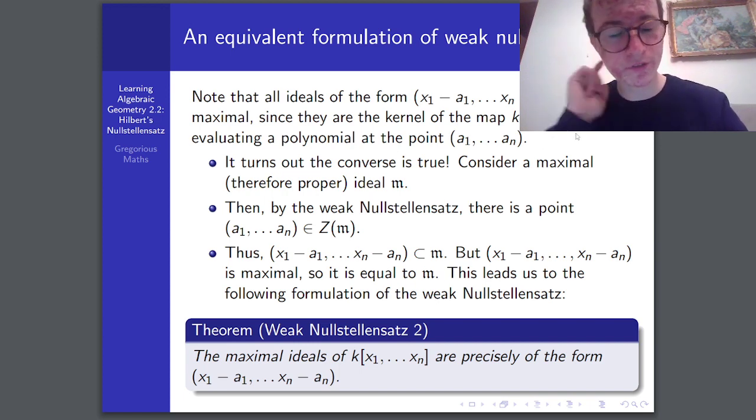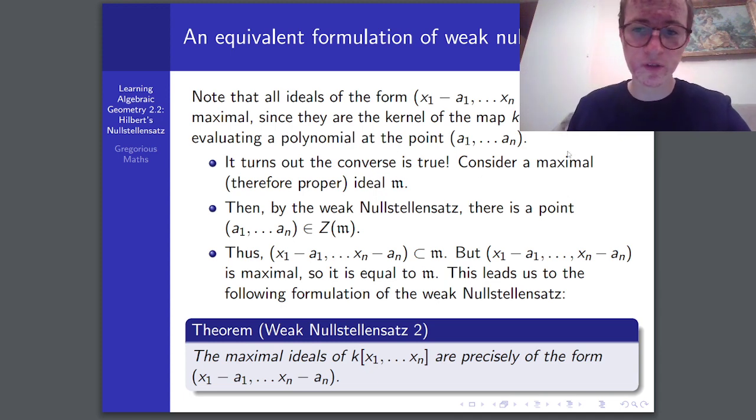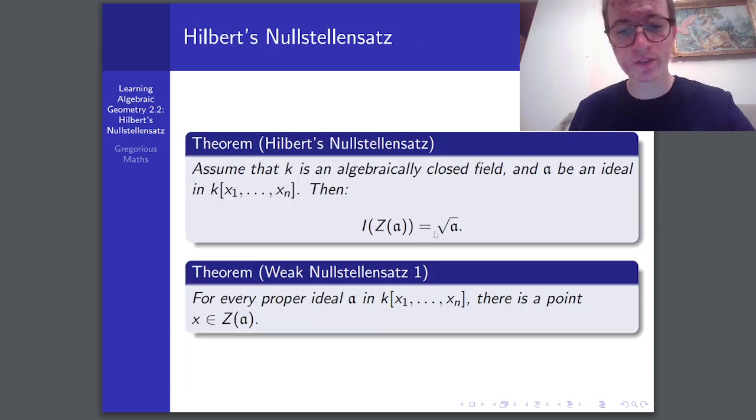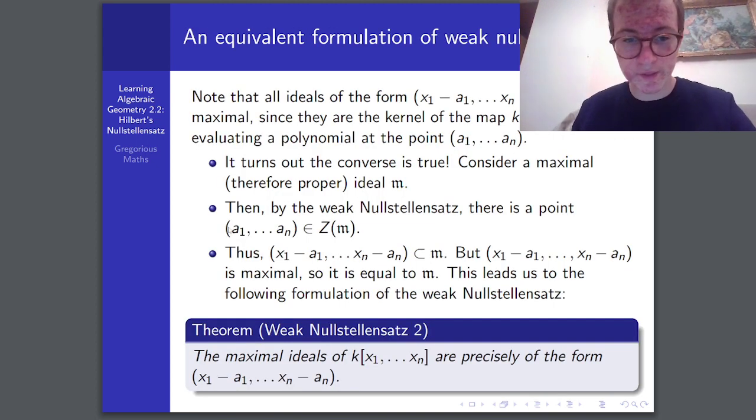However, what's surprising is that the converse is true. That is, if we have a maximal ideal of this polynomial ring, then it is an ideal of this form. So, let's prove this. So, let's consider a maximal and, therefore, proper ideal M. Then, by the weak Nullstellensatz, because it's proper, there is a point, a1 up to aN, in z of M.